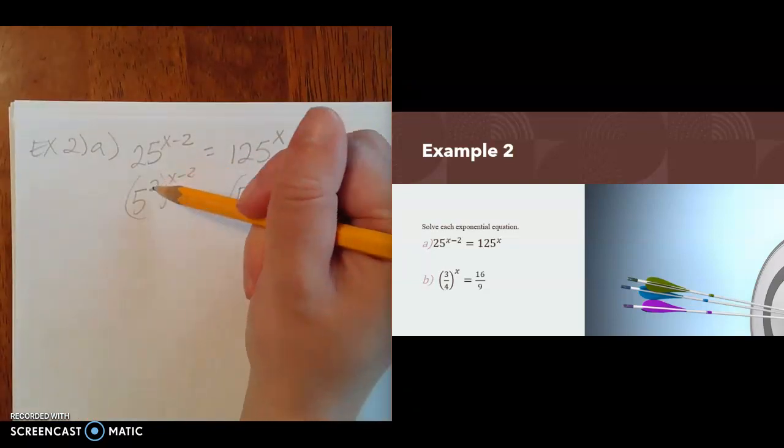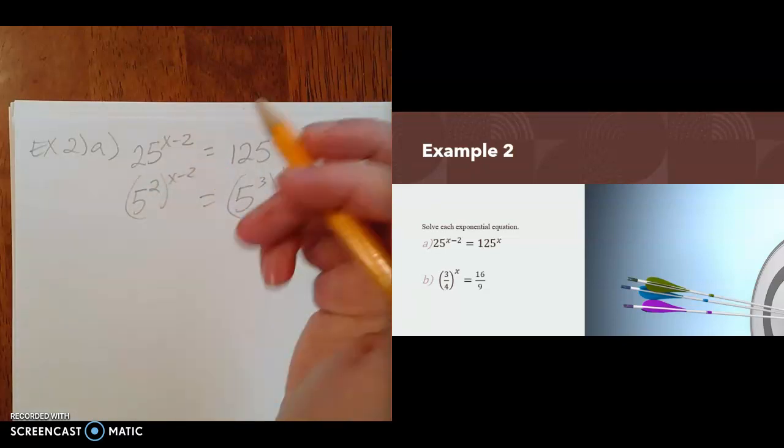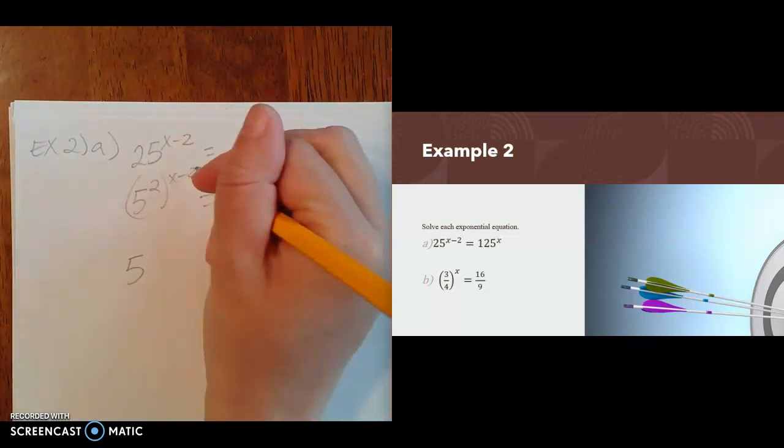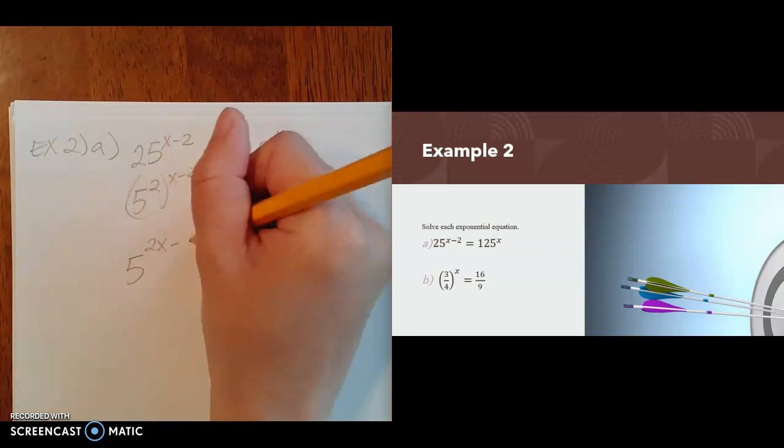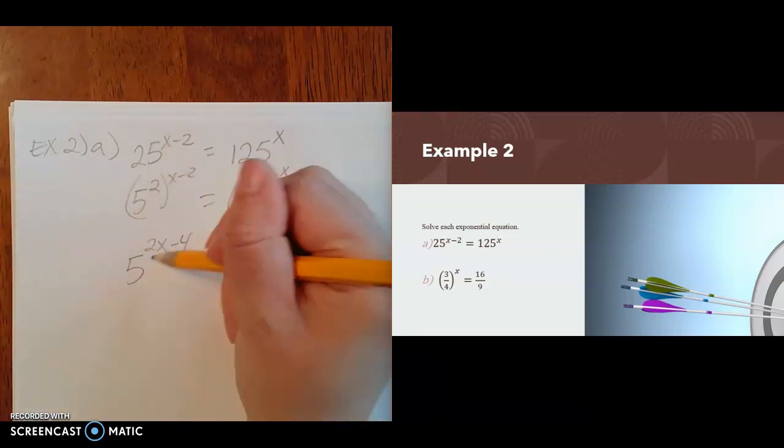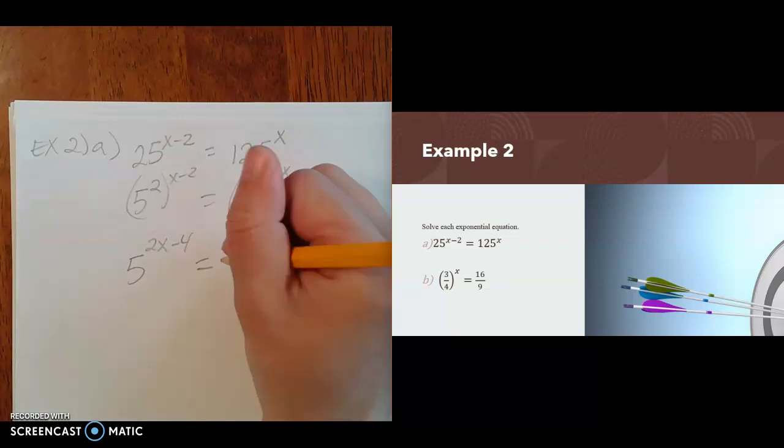Then I'm going to use the power rule where I have an exponent raised to another exponent. I multiply them together. So 2 times x minus 2, I will distribute. I'll do 2 times x and get 2x and 2 times 2 to get 4. So that's really 5 to the 2x minus 4. On the other side, I also have an exponent raised to another exponent, so I'll use that power rule again to multiply those together. 3 times x is 3x.